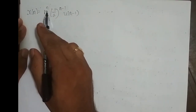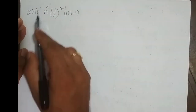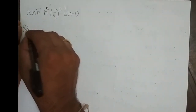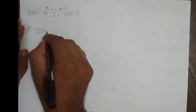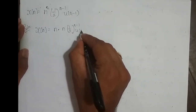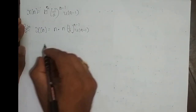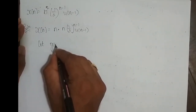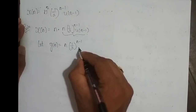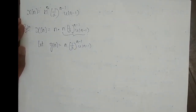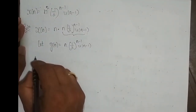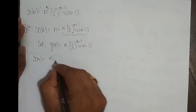We shall take up one more problem. Here x of n is n squared times 1 by 3 power n minus 1, u of n minus 1. Previously it was n into 1 by 3 power n minus 1, u of n minus 1; now it is n squared. So I can write x of n equal to n into n into 1 by 3 power n minus 1, u of n minus 1. I split n squared as n into n, and let g of n equal n into 1 by 3 power n minus 1, u of n minus 1. So x of n equals n into g of n.